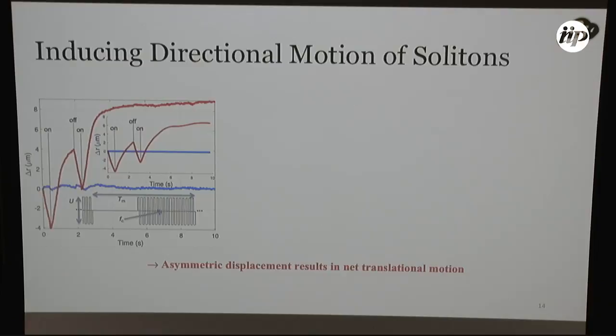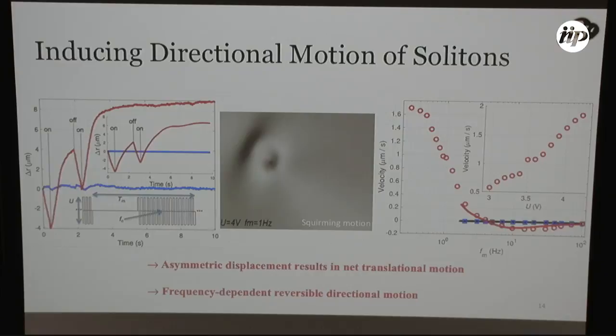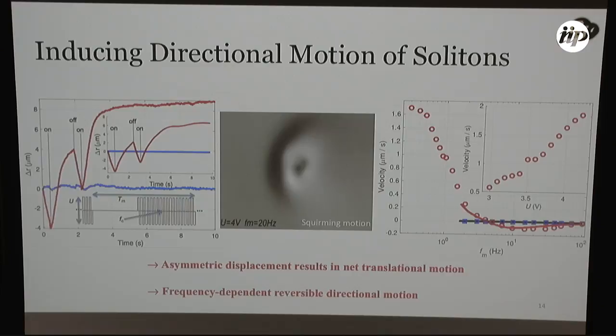And so far, we've been looking at constant applied voltage at high carrier frequency in the kilohertz range. So, what happens if we turn that high frequency on and off at a certain modulation frequency? We see that when we turn the voltage on, we have translation of the soliton in one direction. But when we turn it off, we have a larger magnitude translation in the other direction. And this results in some net translational motion of our soliton that we call squirming. And we can control the direction of this motion by varying the modulation frequency, as you can see here.